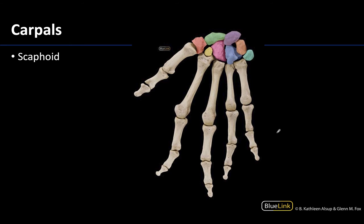Starting with the carpal bones, these are the ones shaded in different colors here. I'm going to circle the proximal row — this is the row that is going to articulate with the radius. This right here is the distal row, and these are articulating with the metacarpals. You will have four bones per row, and the only one you need to identify is this lateral most bone in the proximal row, which is your scaphoid.